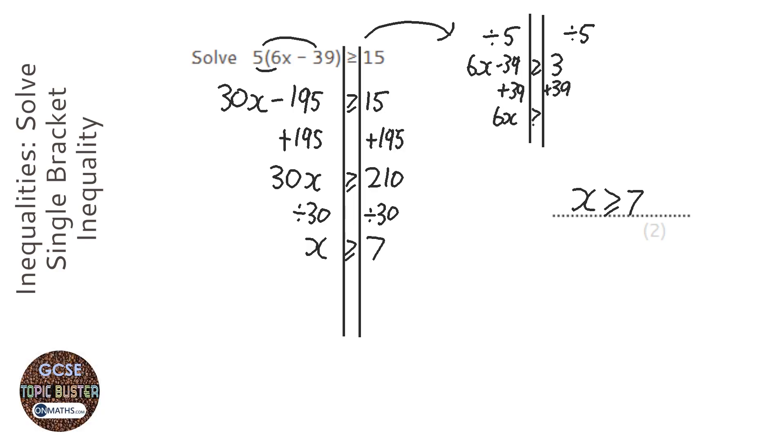So 6x is greater than or equal to, where is it, 42 and then divide by 6. And that's an equally good method to do because you'll get exactly the same answer.